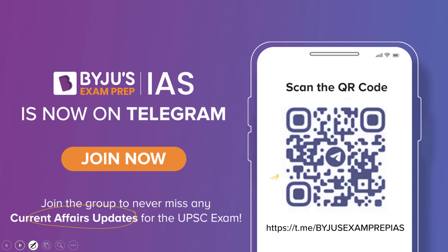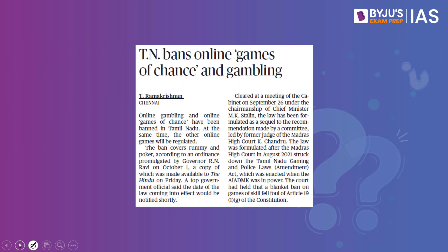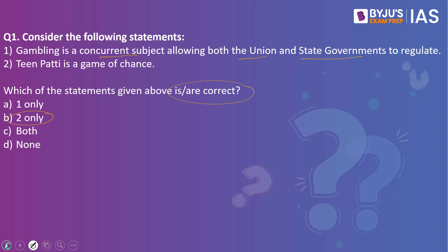Let's look into the first question. Consider the following statements: (1) Gambling is a concurrent subject allowing both the union and state government to regulate. (2) Teenpati is a game of chance. Which of the statements given above is/are correct? The answer is two only. We took this practice question because an article in The Hindu makes a reference to gambling. The first statement is wrong — gambling is a state subject, not a concurrent subject.